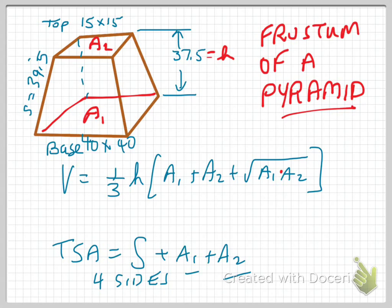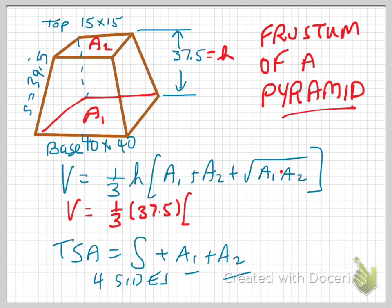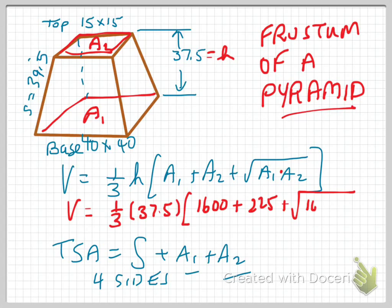So let's begin by determining the volume. We'll start with the volume formula: one-third multiplied by the vertical height, which is 37.5, multiplied by the area of the bottom, which is 40 by 40 — which is 1,600 — plus the area of the top, which is 15 by 15 — which is 225 — plus the square root of 1,600 times 225. This will give you the volume in cubic units. It's just a straight calculation.